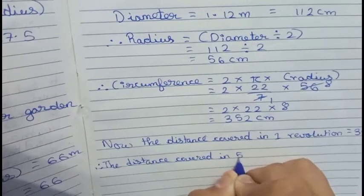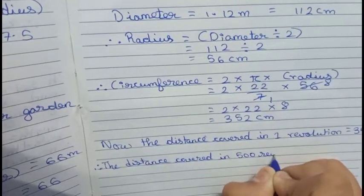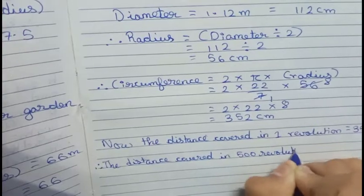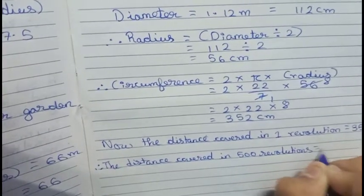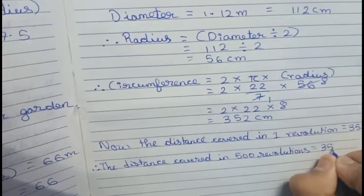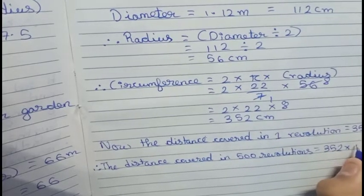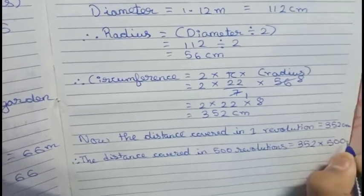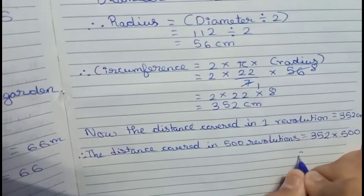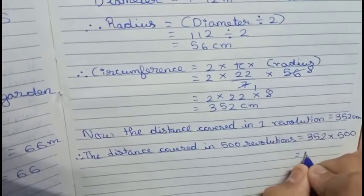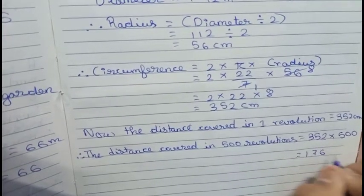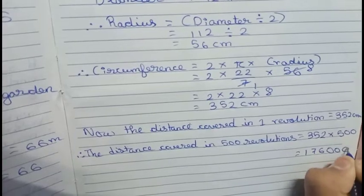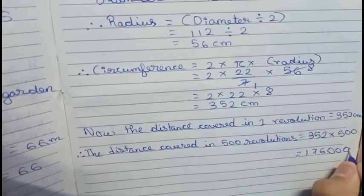It will become 352 into 500, so it will become 176,000. So this is 176,000 centimeters.